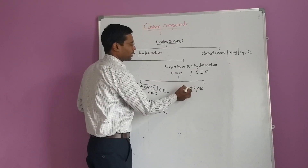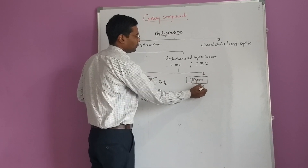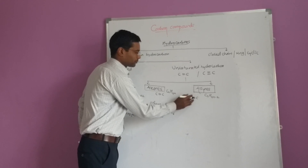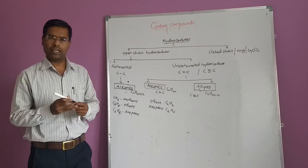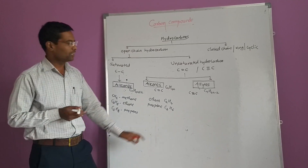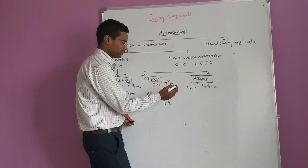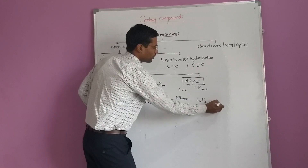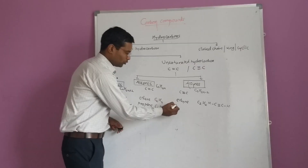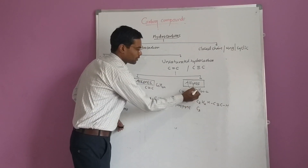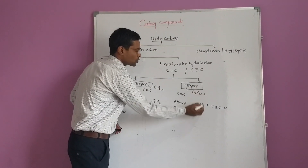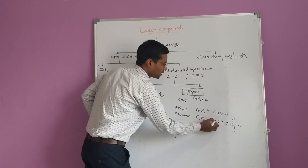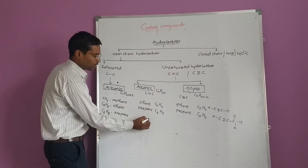Alkynes are also classified as unsaturated hydrocarbons, having the general formula CnH(2n-2), and they contain a carbon-carbon triple bond. Unsaturated open chain hydrocarbons containing a carbon-carbon triple bond are called alkynes. An example is ethyne (C2H2), whose structural formula is HC≡CH. Another example is propyne (C3H4), with the structural formula CH≡C-CH3.